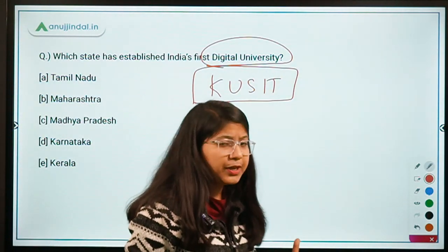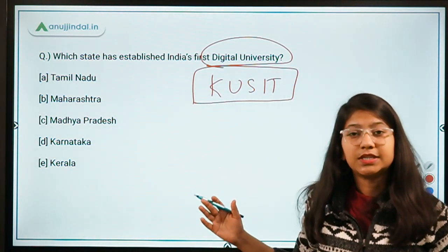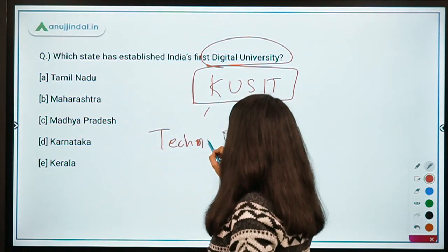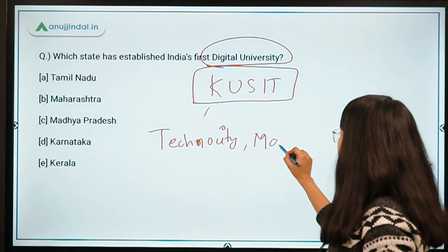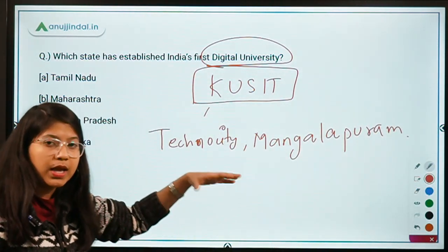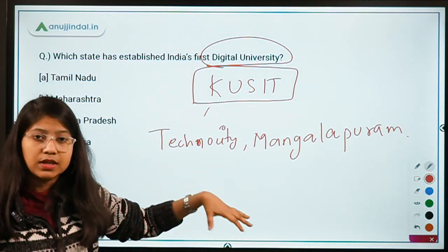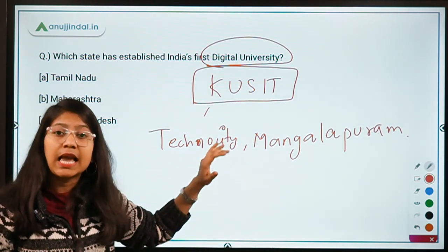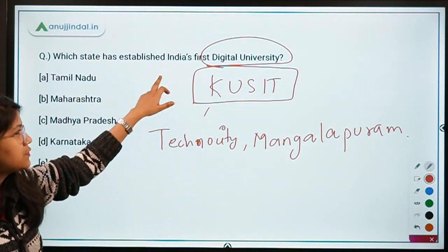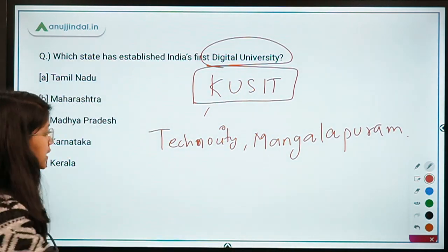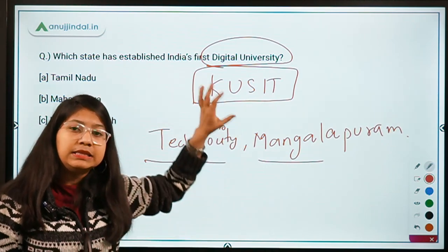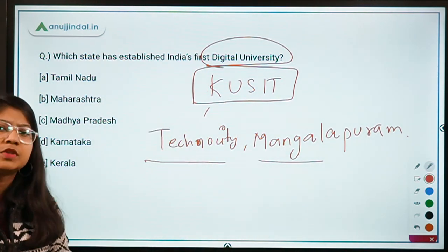This university is an upgraded version of the Indian Institute of Information Technology and Management in Kerala — that institute already existed and has now been upgraded to the Kerala University of Science, Innovation and Technology. The exact location of this university is important because it can be asked in the upcoming RBI exam. It is located at Technocity, Mangalapuram, near Thiruvananthapuram.